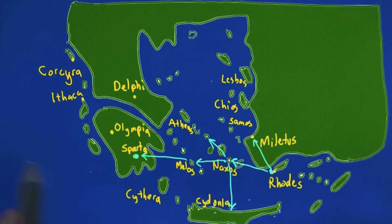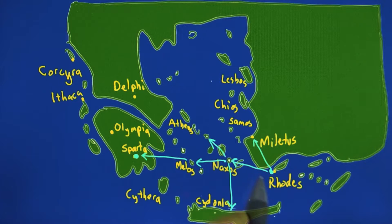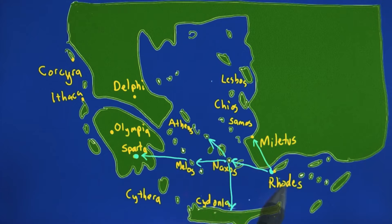So we need several different things in order to make a network like this work. The first thing we need is a way to encode messages — we need to be able to convert the message we want to send. Say it's a message that says the Trojans are arriving; we need to be able to encode that in a smoke signal.